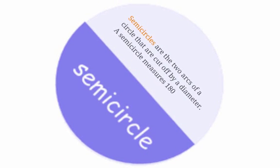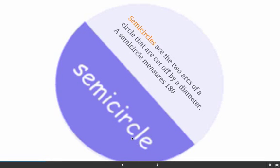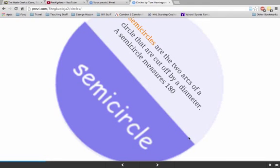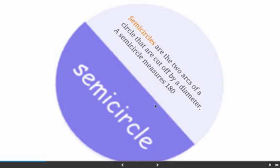Next up is a semicircle. A semicircle consists of the two arcs of a circle that are cut off by a diameter, and they each measure 180 degrees. It's literally just half of the circle, cut in half by the diameter.